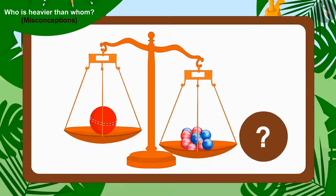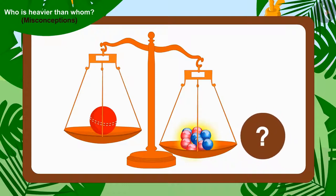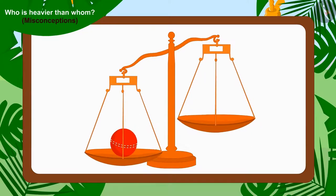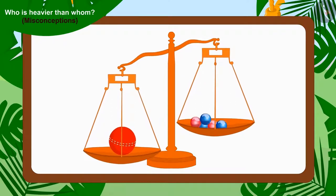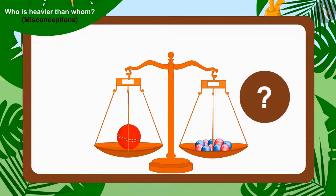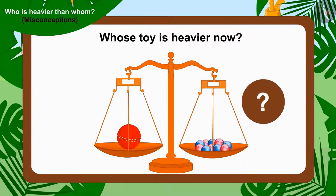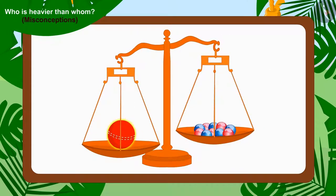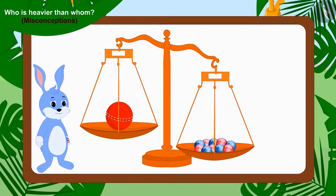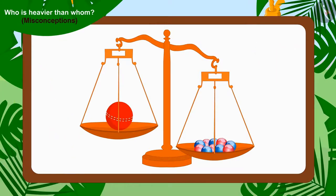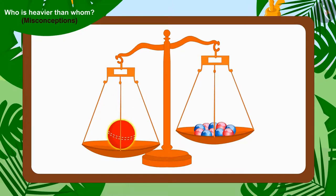Children, is Bunny right? Is it necessary that when the weight of two items is being compared, the item which is more in quantity will have more weight? Let's see. Chanda removed Appu's balloon from Bholla's scale and replaced it with Bunny's ten marbles. The weight of Chanda's one cricket ball is more than Bunny's ten marbles. This means Bunny was wrong — the item with a larger quantity does not always weigh more.